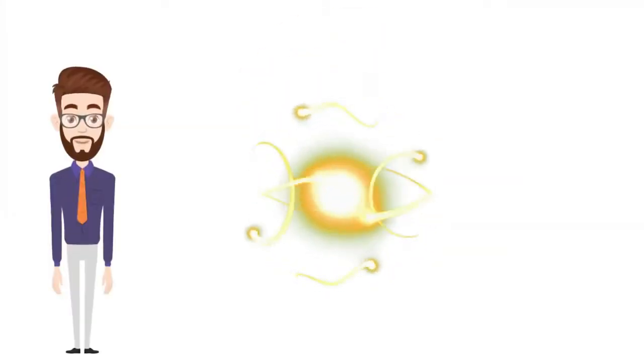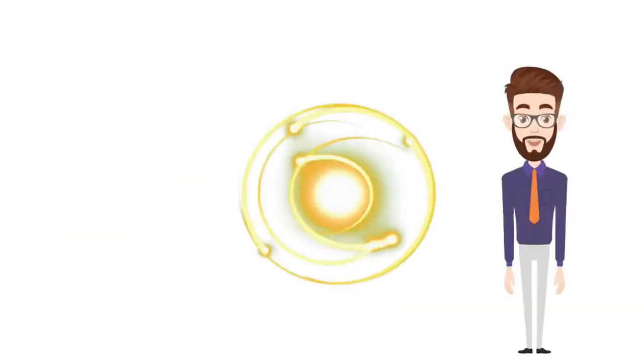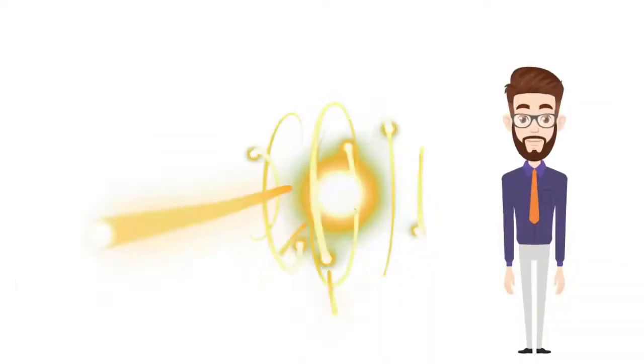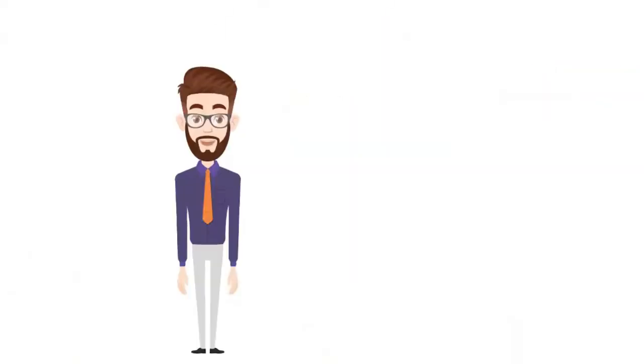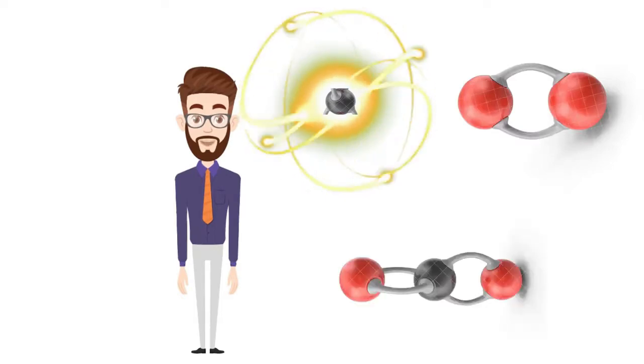This carbon-14 atom behaves just like a carbon-12 atom, but it has a unique property: it is unstable and emits radiation. After the production of this carbon-14 atom, it reacts with environmental oxygen to form carbon dioxide.